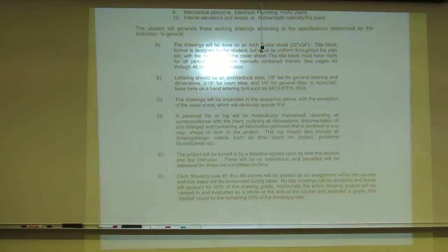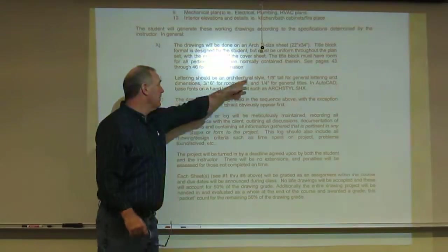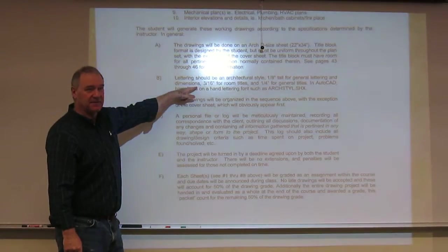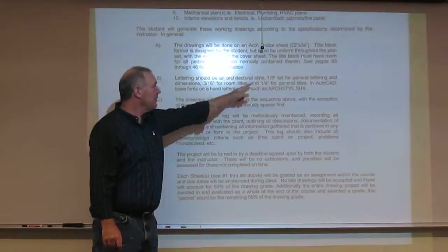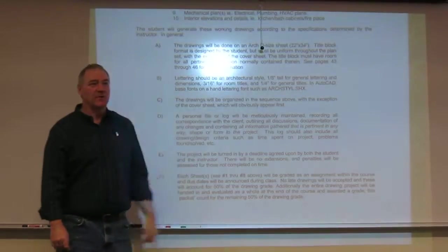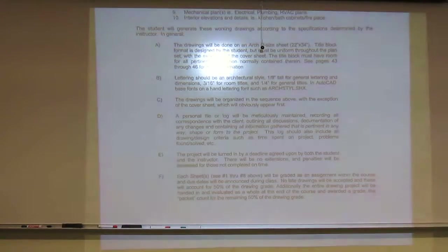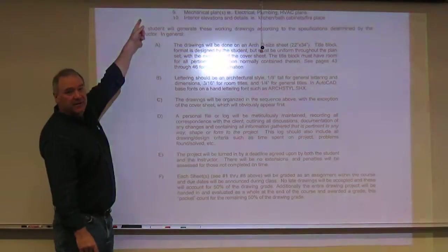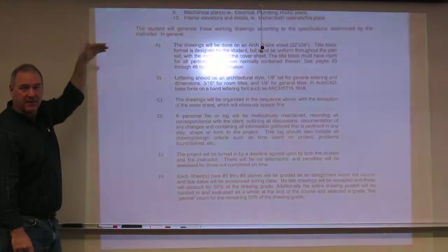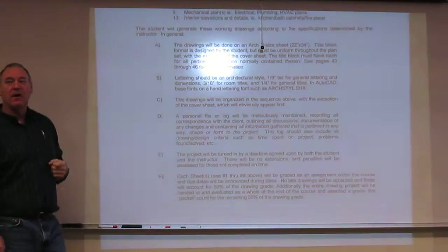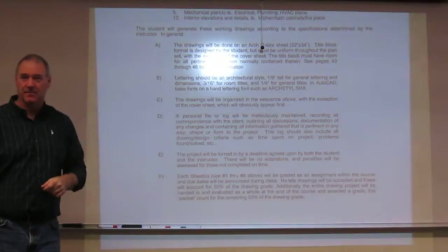We're going to use three types of text sizes. We'll go over this tomorrow. We're going to use eighth inch for our general notes, three sixteenths for our intermediate titles and room titles generally, and quarter inch for our drawing titles. We'll have three different text sizes. We will organize them as listed — site plan, foundation, and so on — and they're actually ordered always in the order of construction.